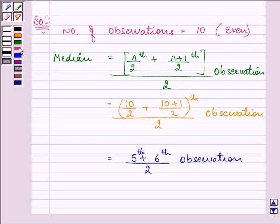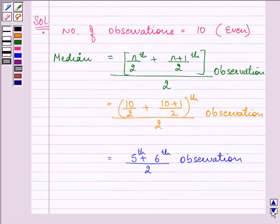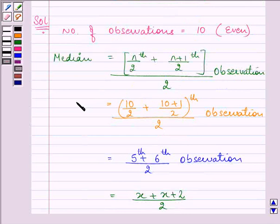Since the data is already in ascending order, we count to the 5th and 6th observations, which are x and x+2. In place of the 5th and 6th observations, we substitute x and x+2, the whole divided by 2. The median is given as 63.